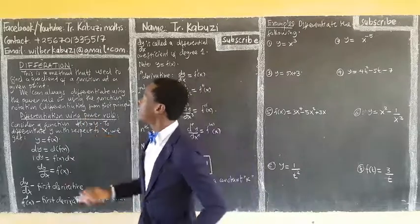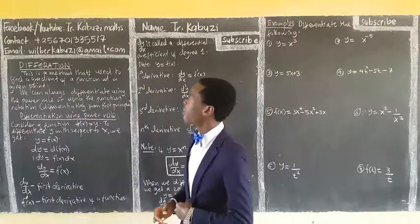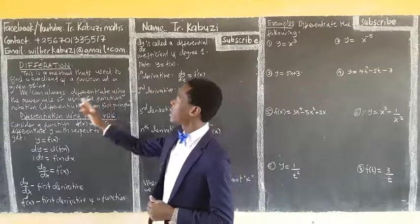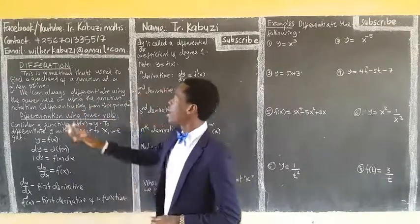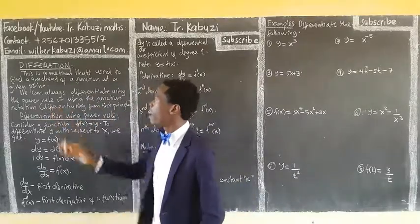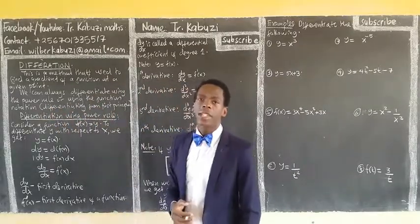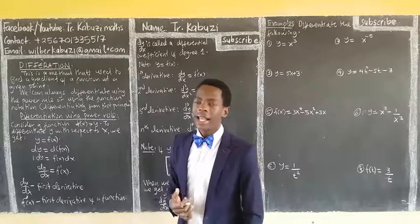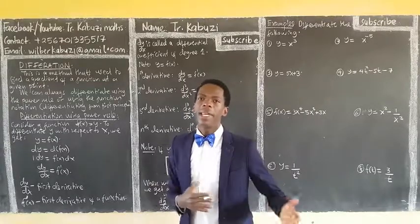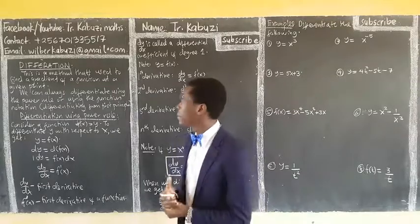Differentiation is a method that is used to find the gradient of a function at a given point. We can always differentiate using the power rule or using the function notation. We are going to see in the next lesson how we get this function notation — it is a method that we use to differentiate from first principles.